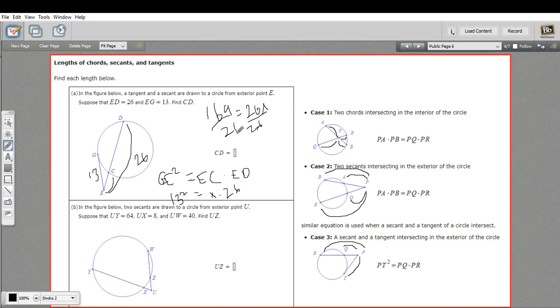So 169 divided by 26, we've got 6.5, so X equals 6.5, and this is not exactly what we're looking for. We're looking for CD. So this is 6.5, but the whole length is 26, so this must be 19.5. So CD here is 19.5.